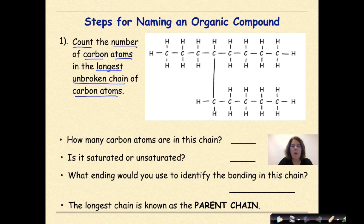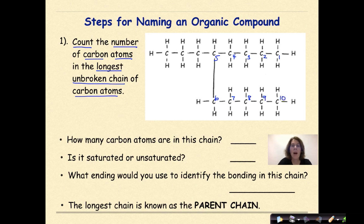If we found the number of carbons in the longest continuous chain, you should have started at carbon 1, then 2, 3, 4, 5, 6, 7, 8, 9, and 10. So there are 10 carbons in this chain. Is it saturated or unsaturated? If it's saturated, there are all single bonds between the carbons in the parent chain. If it's unsaturated, you're going to see a double or triple bond. The correct answer here is saturated, because we have all single bonds. The ending you would use to identify the bonding in this chain is -ane.